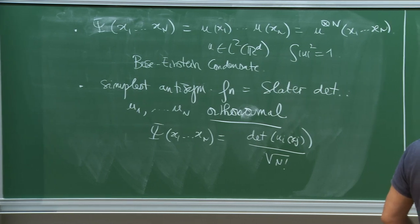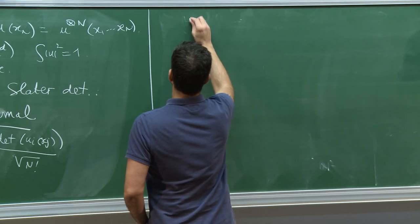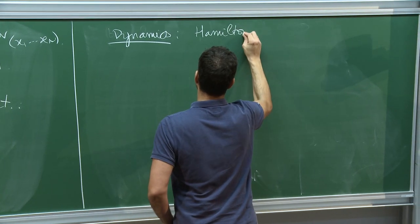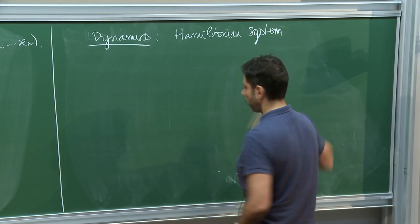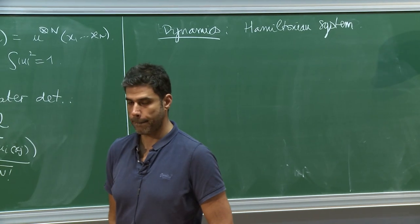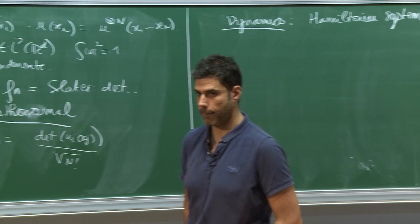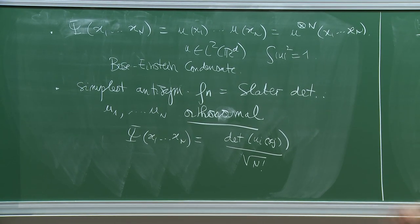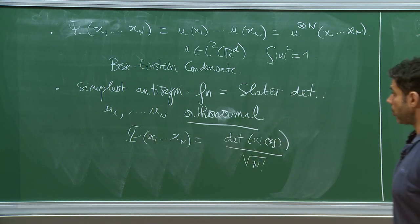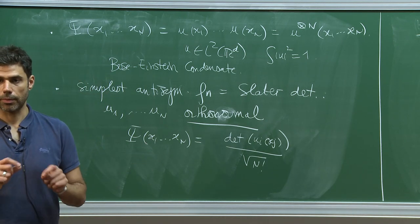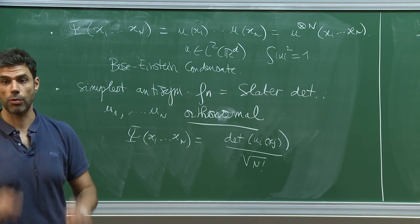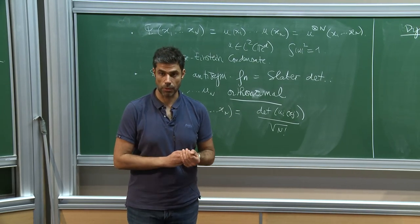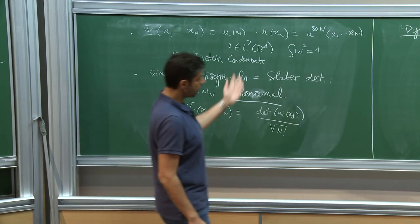Now we want to do the same as in the classical case. What is the dynamics? It's also a Hamiltonian system. Note that ψ has to be complex-valued — that's very important. When ψ is complex-valued you do have two variables: real part and imaginary part. And E(ψ_1 + iψ_2) equals E(ψ_1) + E(ψ_2), because the Hamiltonian itself is real. Writing the Hamiltonian system in the usual symplectic way, you find iψ̇ = Hψ, which is Schrödinger's equation. By changing units of time you can remove any constant factor. So it's a Hamiltonian system in infinite dimension.